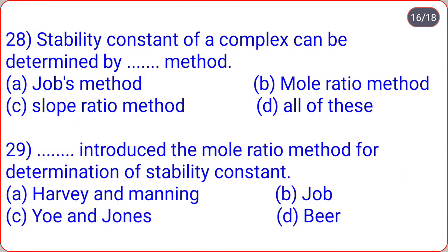The stability constant of a complex can be determined by Job's method, mole ratio method, and slope ratio method — all of these, option D. The mole ratio method was introduced by Yew and Jones, while the slope ratio method was introduced by Harvey and Manning.